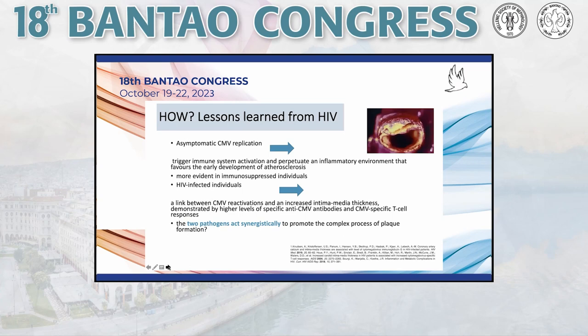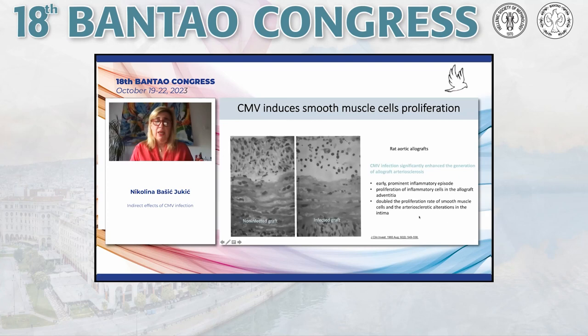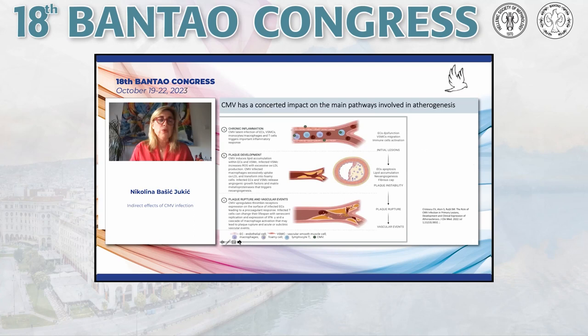This may also be a consequence of so-called two-hit damage to the intima, leading to changes of the vessel wall. One study — approximately 20 years old but very interesting — examined morphological changes in rat aortic allografts infected by CMV. They found that CMV infection caused an early, prominent inflammatory episode with proliferation of inflammatory cells and smooth muscle cells, along with atherosclerotic changes of the intima in infected aortic grafts.